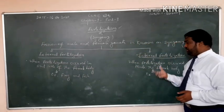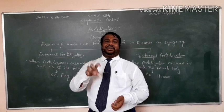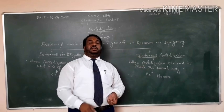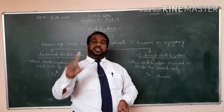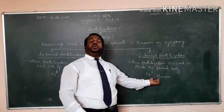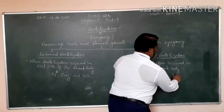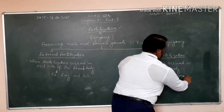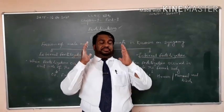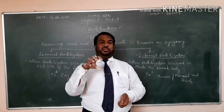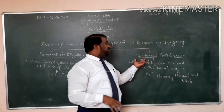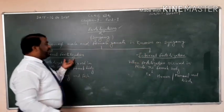Now in internal fertilization, when fertilization occurred inside the female body. So in internal fertilization, the number of male gametes is more and the number of female gametes less. For example, human or you can say mammals and birds also. They have protection inside the female body so they are less vulnerable to predators. So it is about internal fertilization and external fertilization.